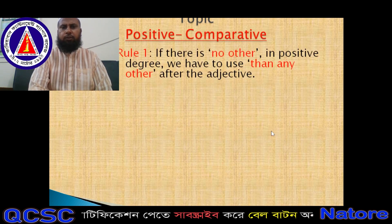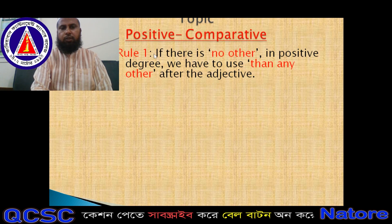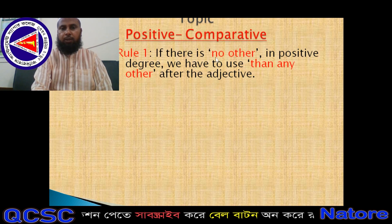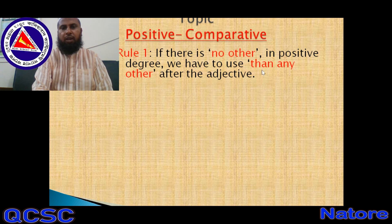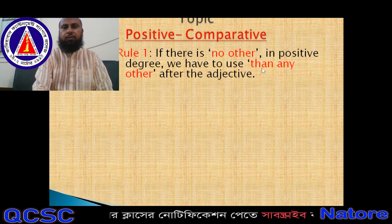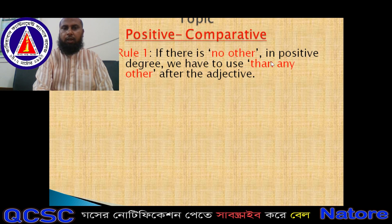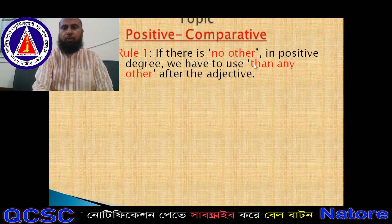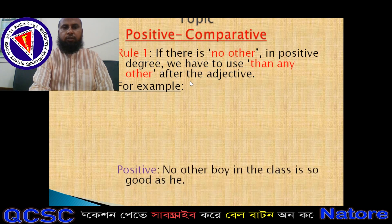This is the first one: from positive to comparative. Rule number one — if there is 'no other' in the positive degree, we have to use 'than any other' after the adjective. Remember: if there is 'no other' in the positive degree and we have to transform into comparative, then we use 'than any other' instead of 'no other,' but it should be used after the adjective.